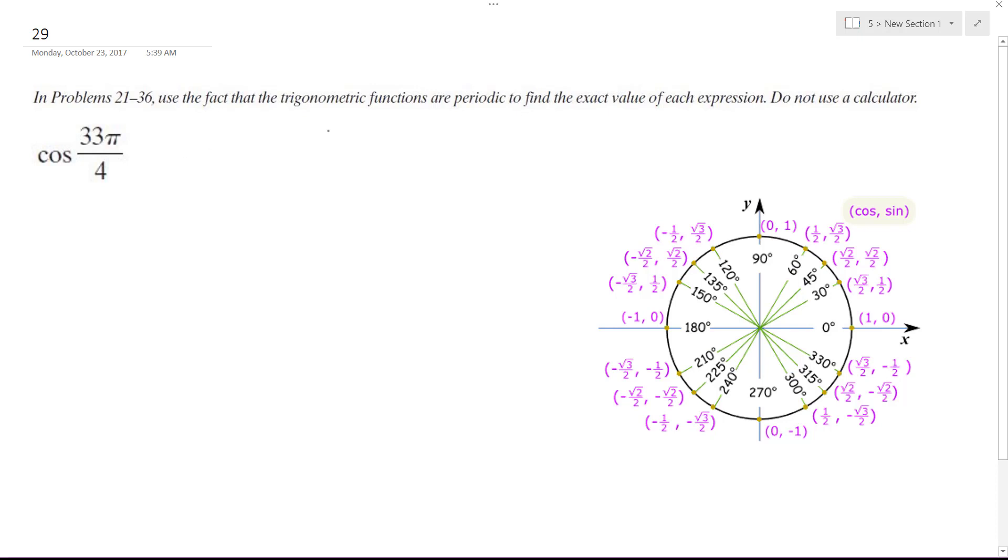So if I, one trip around the unit circle is 2π, but to get this equivalent to this, 8π over 4 is one trip around the circle. So 8π times 4, so that becomes 32π over 4.